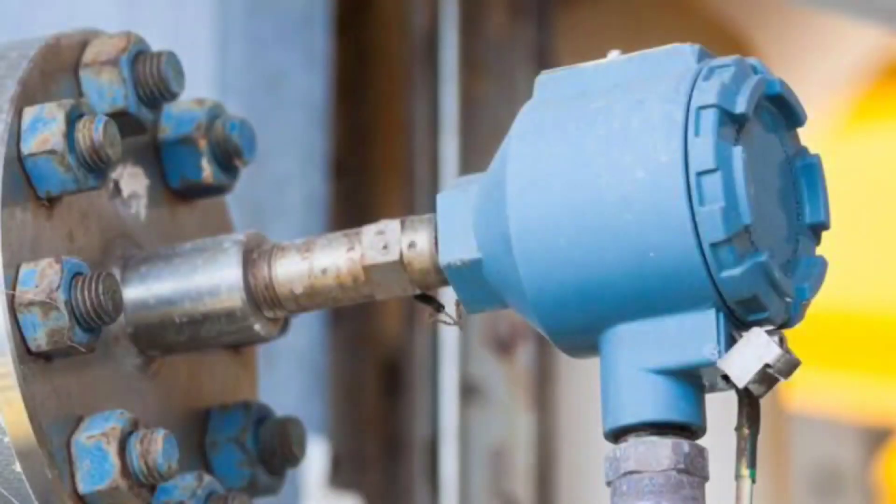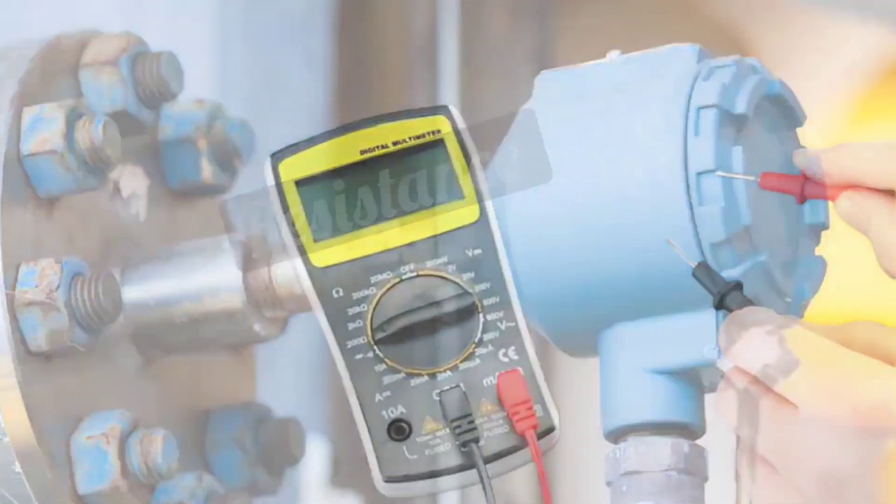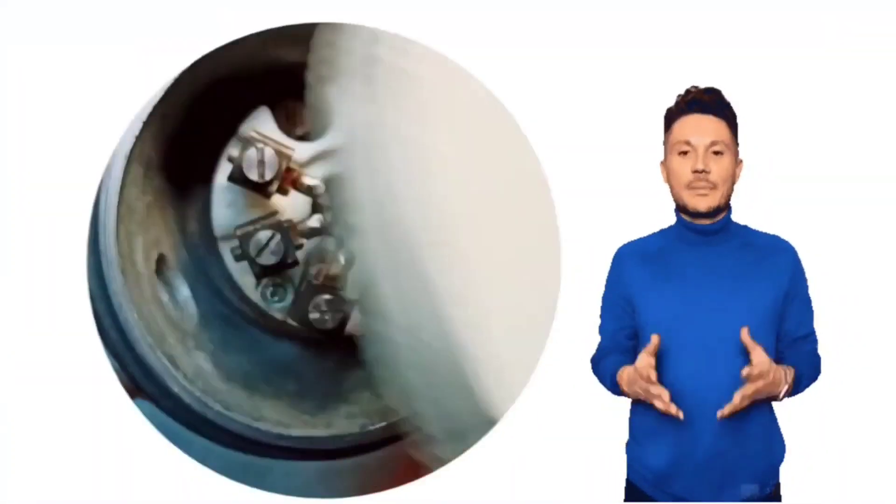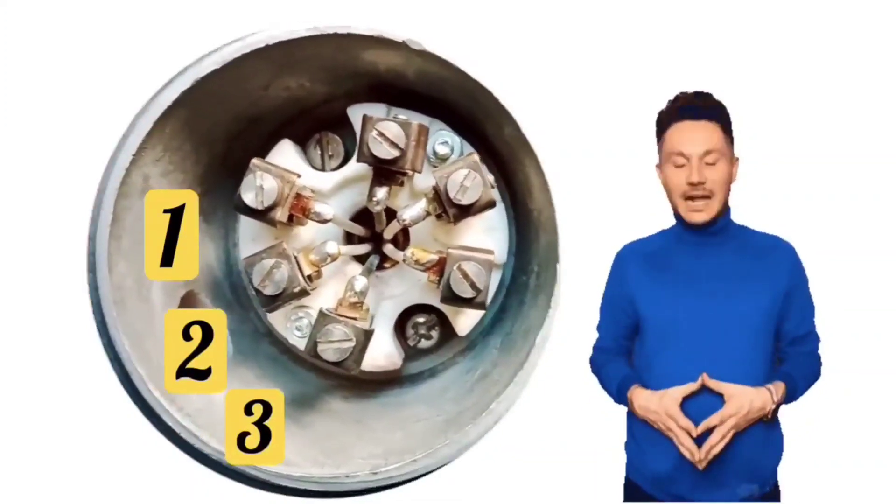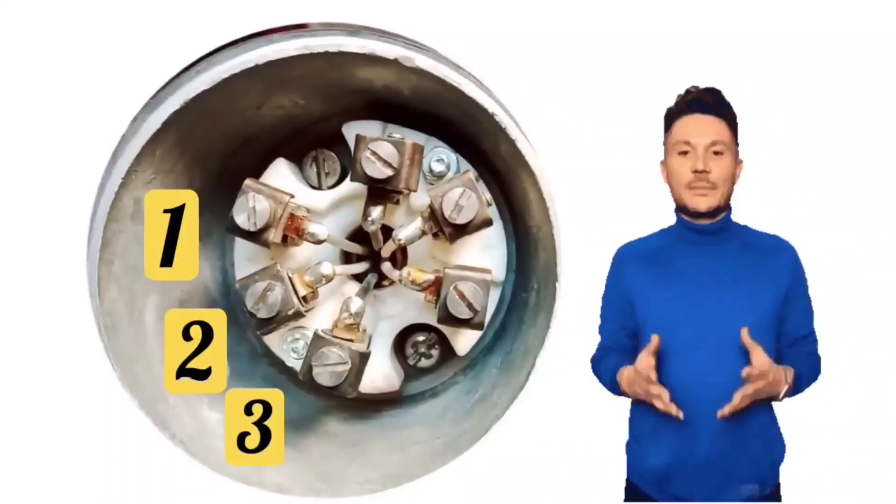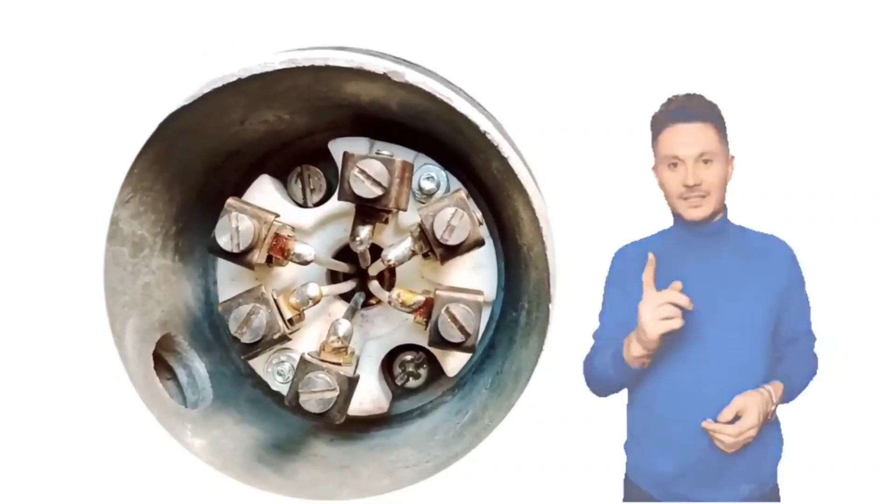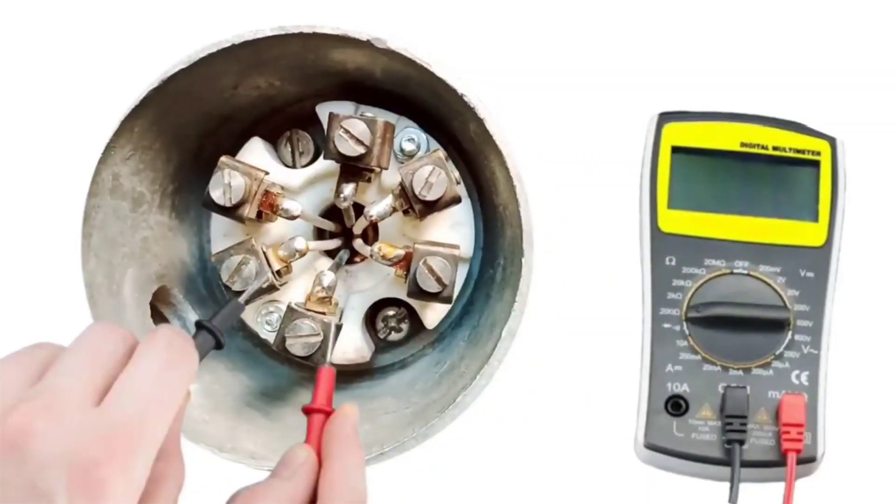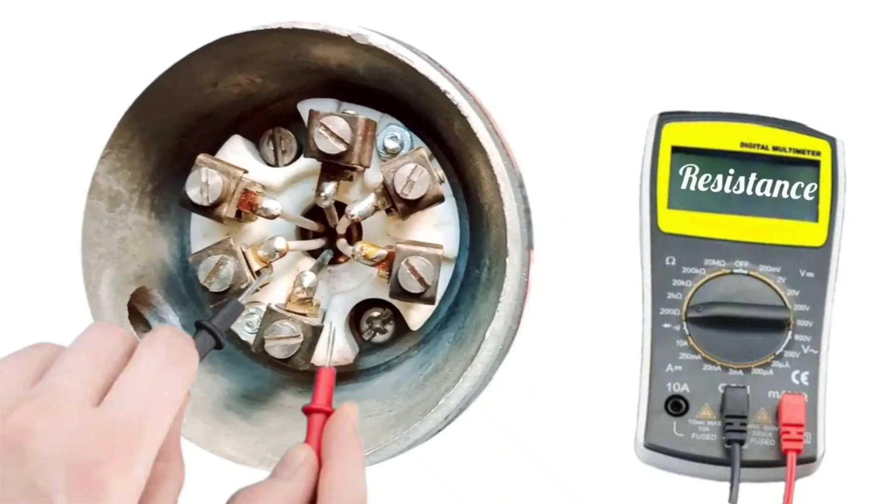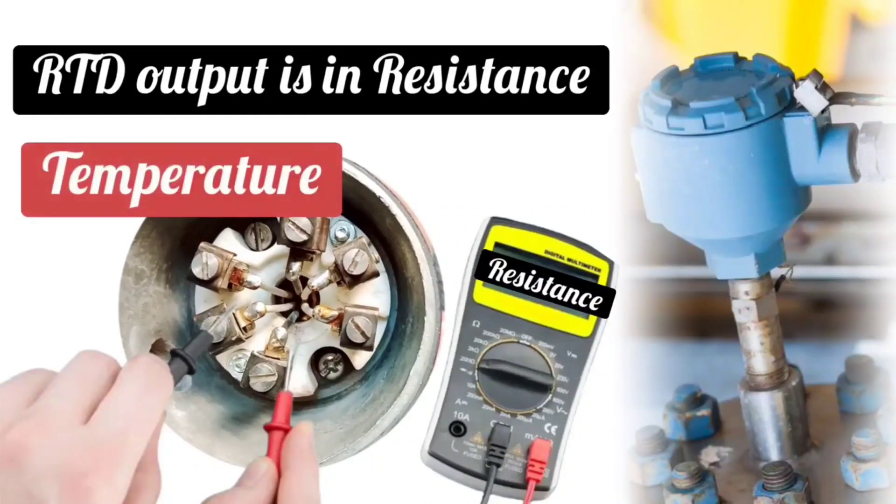When the RTD is checked by using a multimeter, resistance is measured. When you open RTD, you will see three wires. Two wires are of same colors, and one wire is of different color. Suppose two white color wires and one black color wire is there. One probe of multimeter is put at white color wire, and another one is put at black color wire. And we will check the resistance. Meaning, RTD's output is resistance, and from this resistance, temperature is calculated.